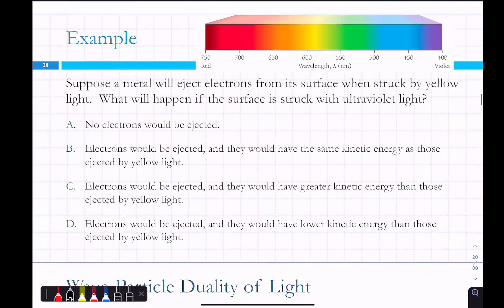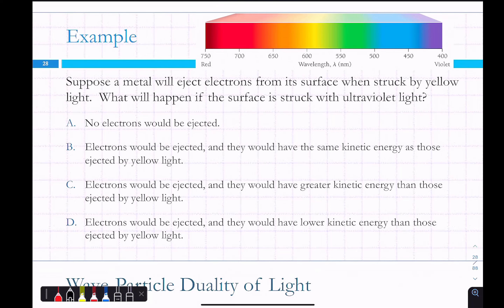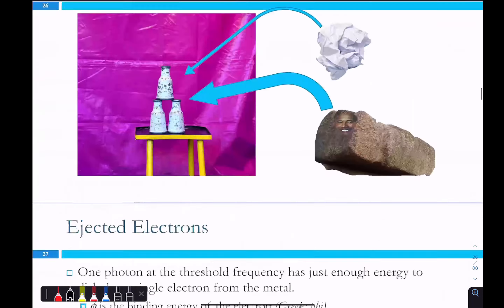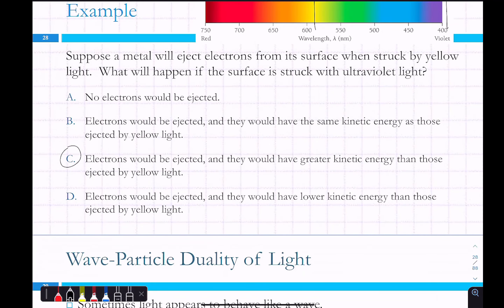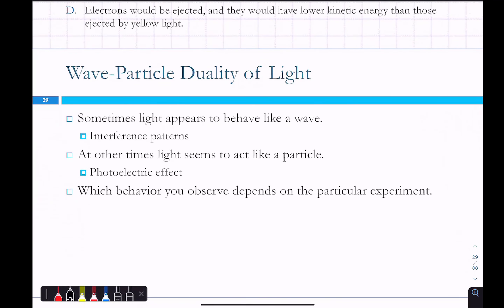We can relate this to frequencies of light. Suppose a metal ejects electrons when struck by yellow light. What happens if struck by ultraviolet light? Yellow is in the visible range; ultraviolet is higher frequency, higher energy. Electrons would be ejected and they would have greater kinetic energy — each UV photon has higher energy than a yellow photon. Just like throwing the rock faster with higher energy knocks the milk bottle away with higher energy. This was a breakthrough: previously they thought a wave is a wave and a particle is a particle, but the photoelectric effect showed light has properties of both.